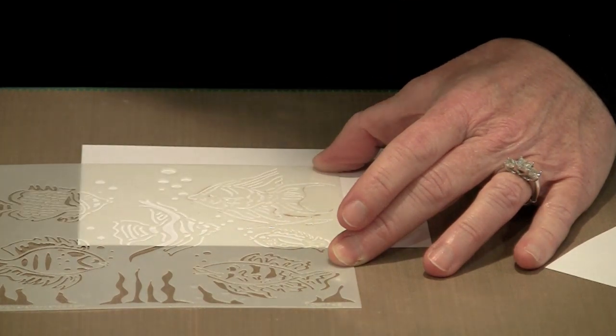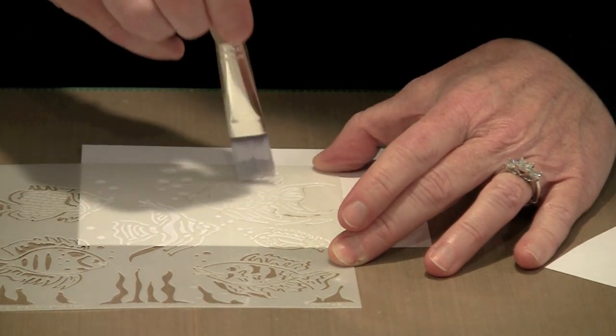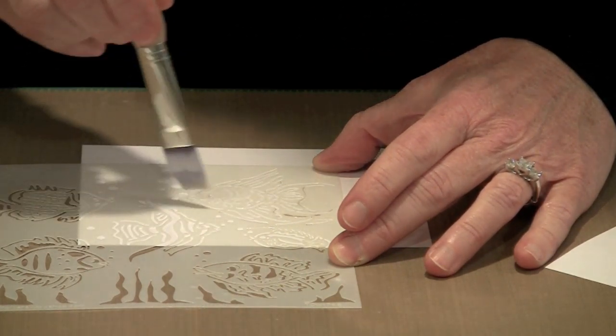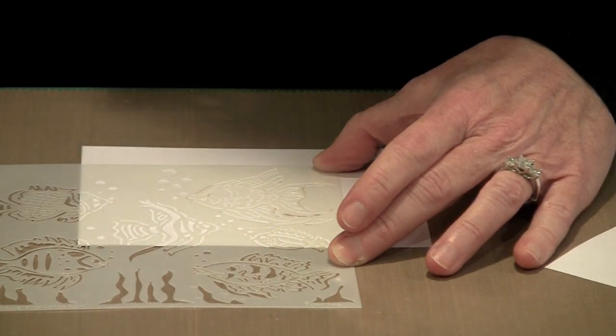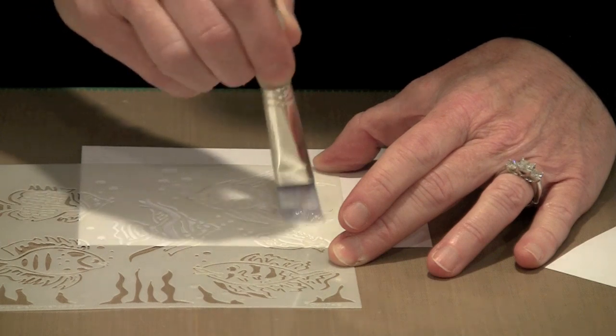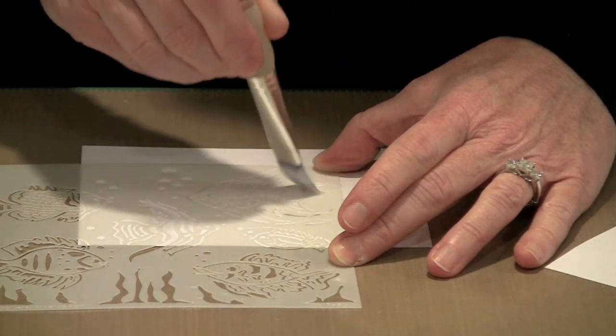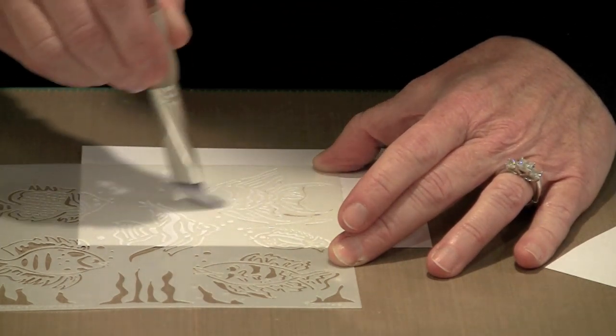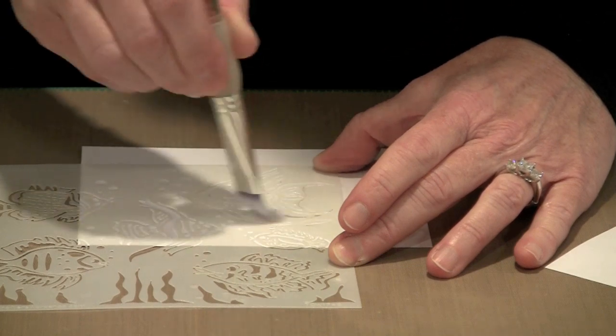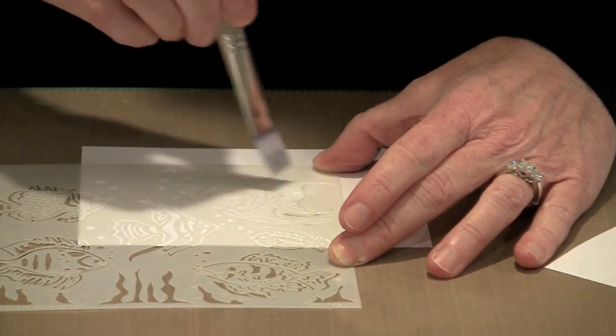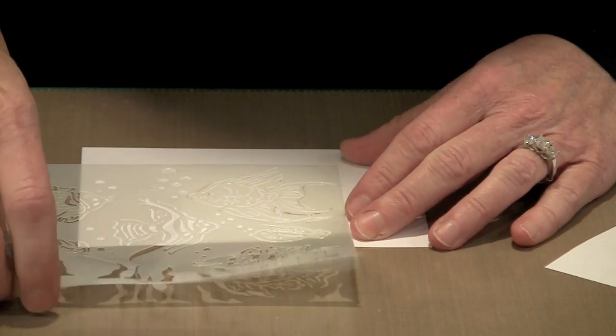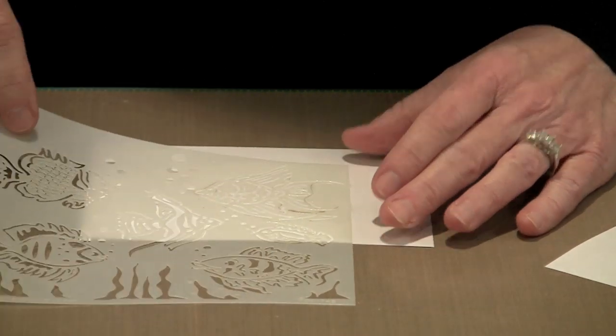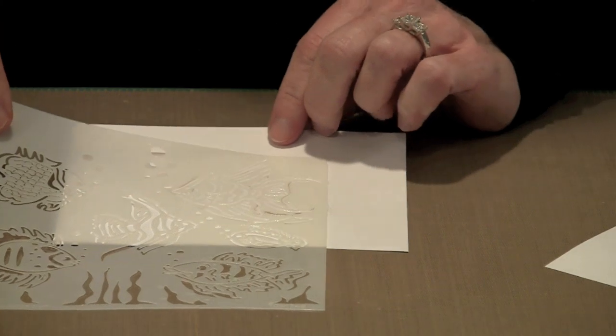I'm going to work fairly quickly because I don't want this glue to dry on top of the stencil any more than it has to as it sits here. I just don't want to ruin this stencil. So I'm going to put this brush in a cup of water the minute I'm through applying the glue, and then the stencil is going to go face down on a wet paper towel so it doesn't get ruined.